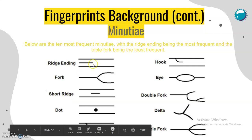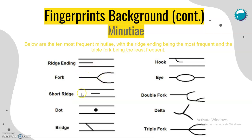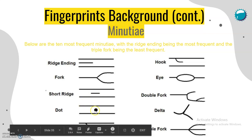The ten minutiae types include: the ridge ending, the fork, the short ridge, the dot, the hook, the double fork, the delta triple fork, and the bridge.